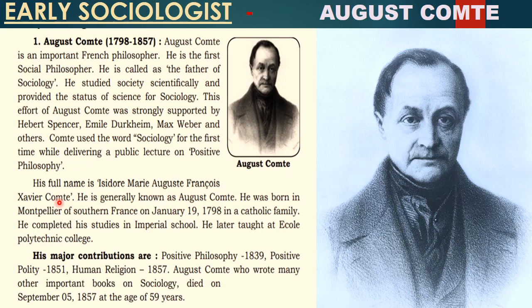He had written many books, which are his major contributions. The first is Positive Philosophy, written in 1839. Later he wrote Positive Polity in 1851, and in 1857 he wrote Human Religion. He had written many books, but out of those, these three were very important: Positive Philosophy, Positive Polity, and Human Religion. He died on September 5, 1857, at the age of 59 years.